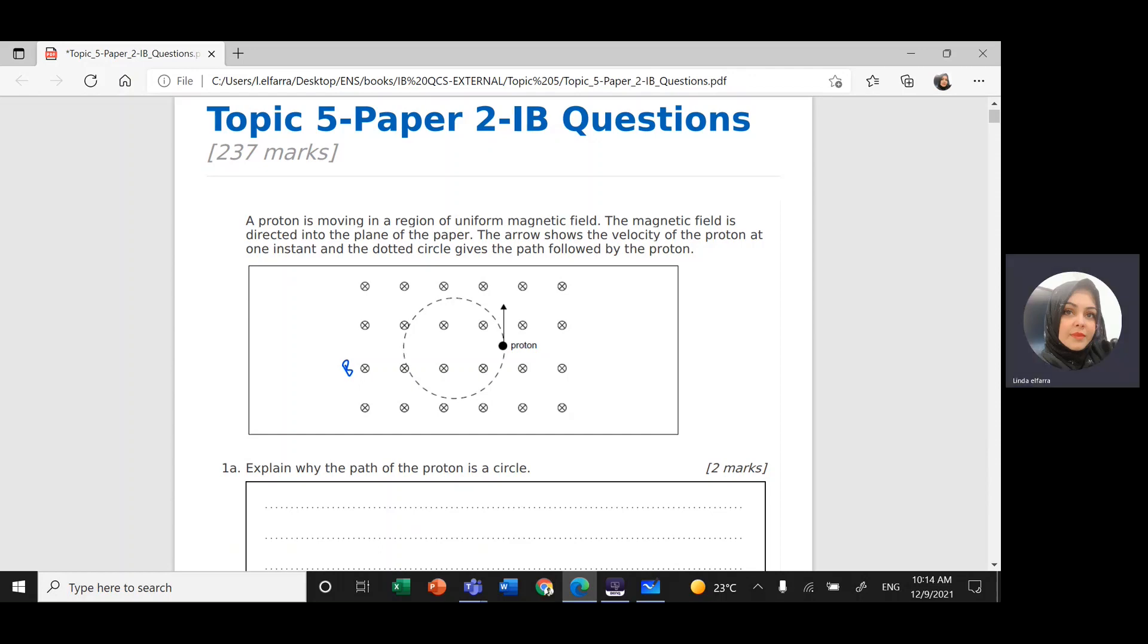So if you have an arrow, the point of the arrow is coming towards you. And this X, the tail of the arrow, represents the field going inside the plane of paper. The arrow shows the velocity of the proton. So here this is the velocity of the proton V in this direction.